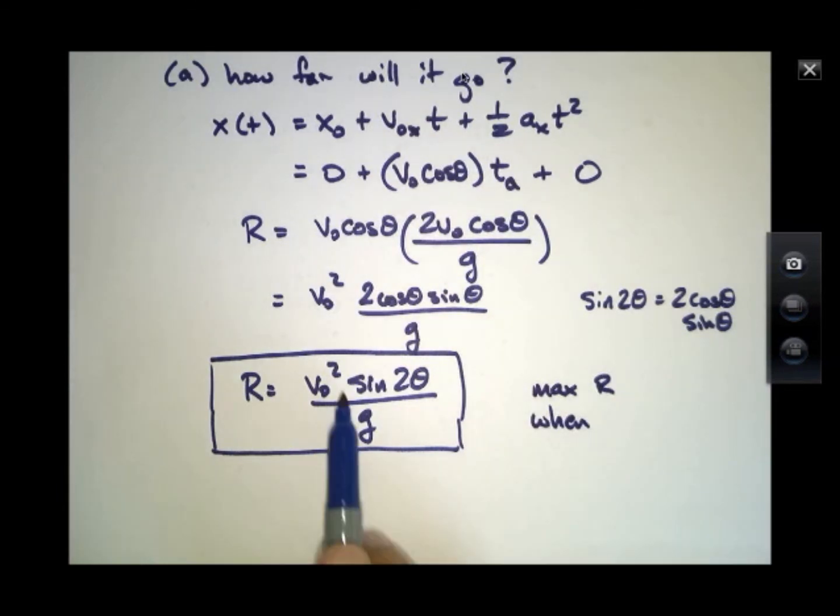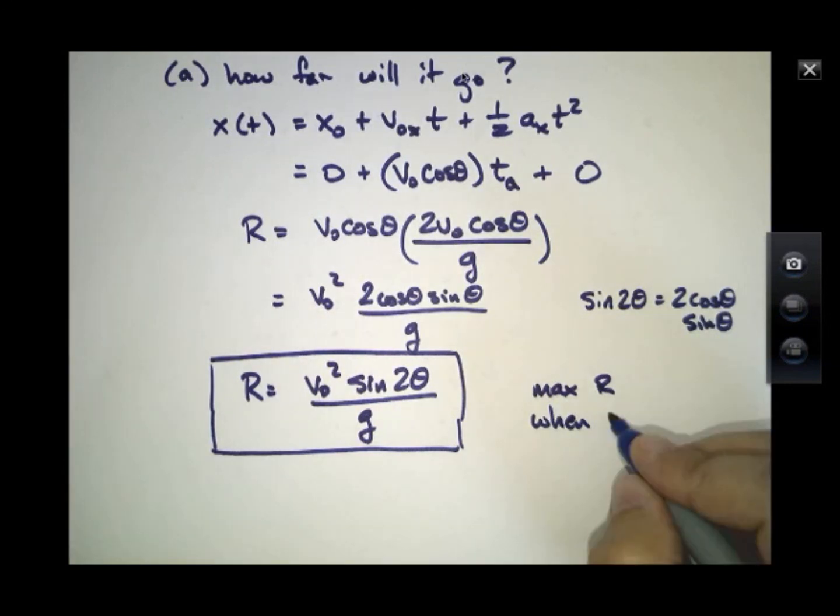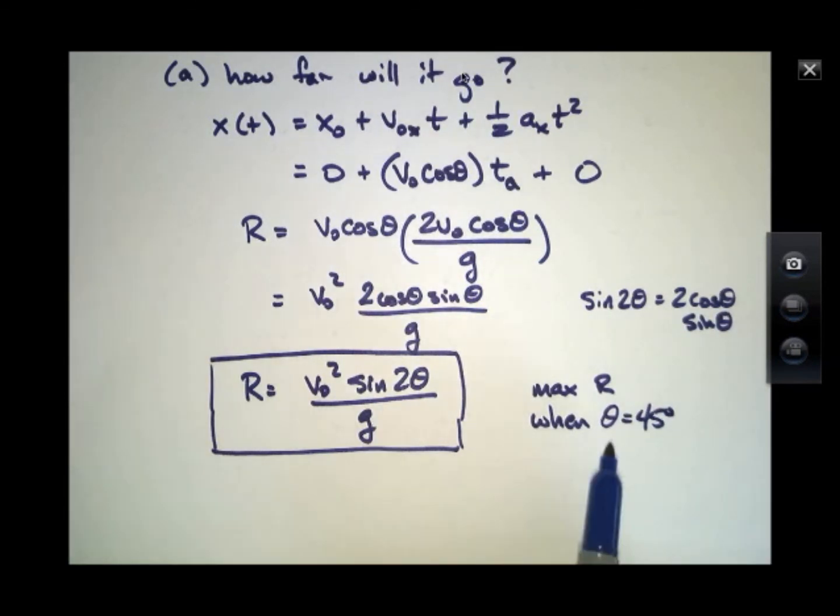This sine of an angle is always less than or equal to 1, but it equals 1 when the argument of the sine function is 90 degrees, or in other words this theta is 45 degrees.